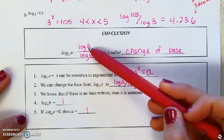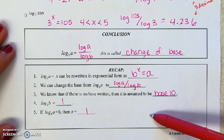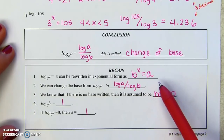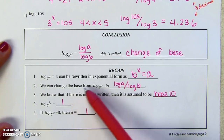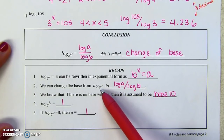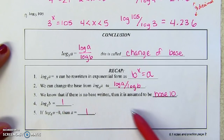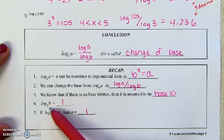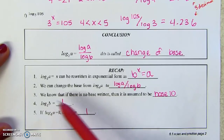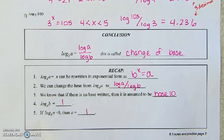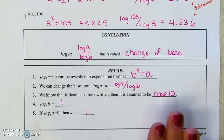Recap: this is called logarithmic form and this is called exponential form — the base to the power of x equals the argument. We can change the base from log base B of A to log of A divided by log of B. Just make sure you're reading it as log base B of A. We know that if there is no base written, it's assumed to be base ten — that's called a common logarithm. Anytime the base and argument are the same number it equals one, because B to the one is B. Anytime a log equals zero, the argument was one, because base to the zero equals one.